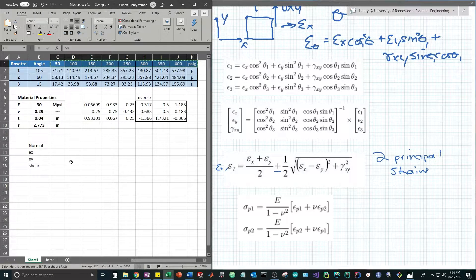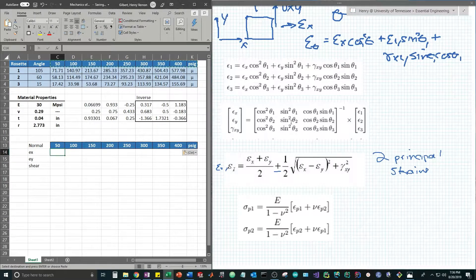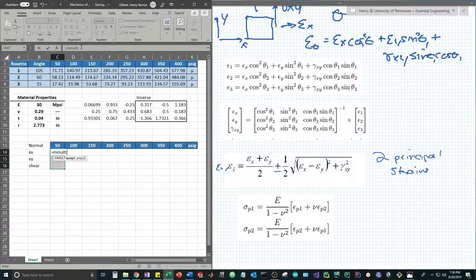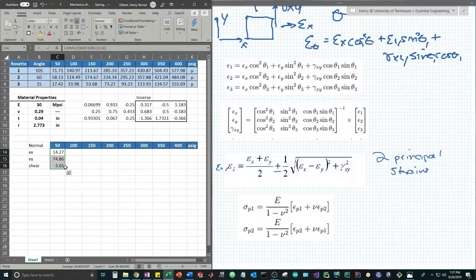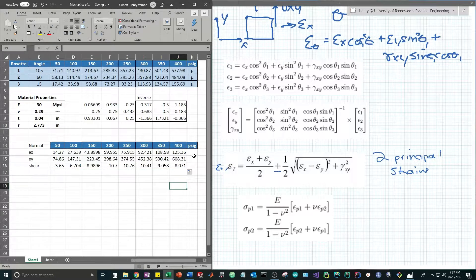We select a 3x1 block and say equals MMULT which stands for matrix multiplication. Let's select our inverse array as the first input, and now we select our 3x1 block at 50 psi. Let's make our inverse matrix absolute referenced so that when we drag this across we're not messing up our formula. Remember to hit control shift enter to calculate the 3x1 block. Now let's drag it across. Now we're given normal strains at each value of applied pressure.